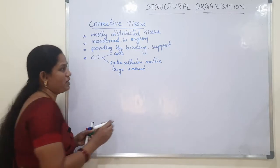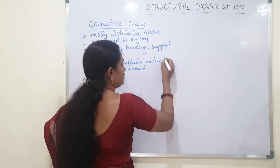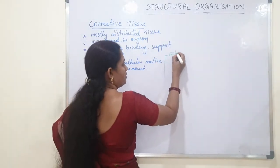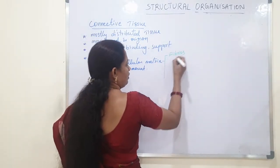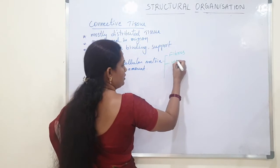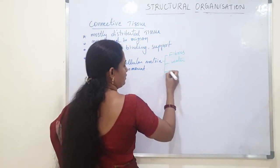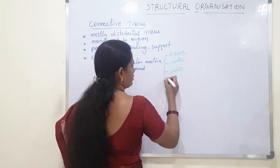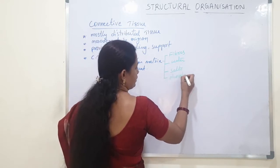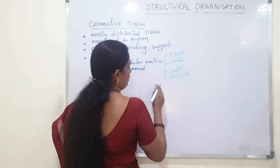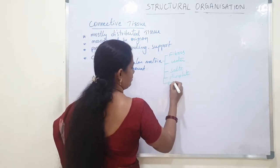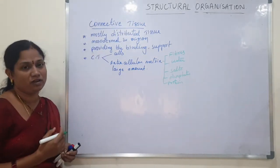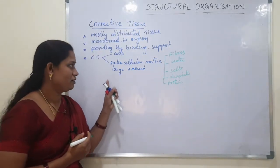In the extracellular matrix, different components are present: fibers, water, salts, phosphates, and proteins. So these are the different types of materials present in the matrix.